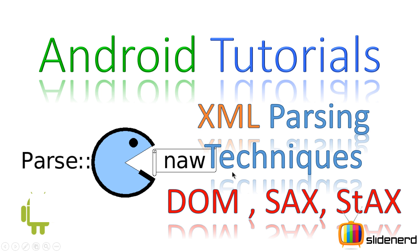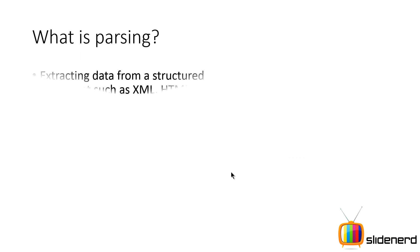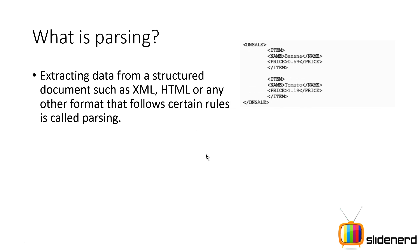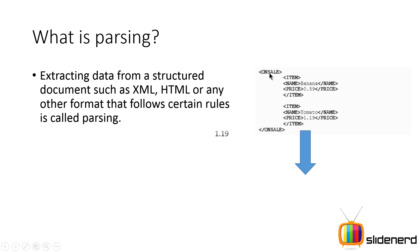First, what is parsing, and what are these techniques — DOM, SAX, and others? If you're a beginner, that's a fair question. Parsing means extracting data from a structured document like XML, HTML, JSON, or any format that has a defined way of writing data. Take a look at this simple document: there's a tag called 'item', then a name 'banana' with price 0.59, and another name 'tomato' with price 1.19. You want to extract that cost information — that's parsing.